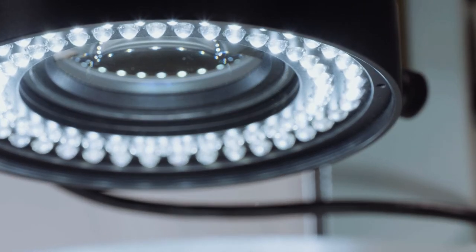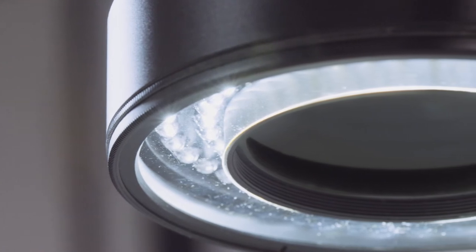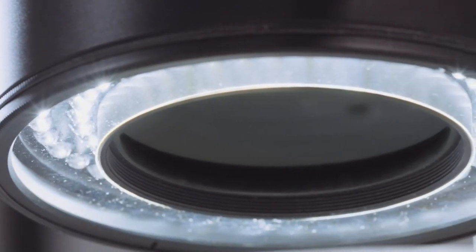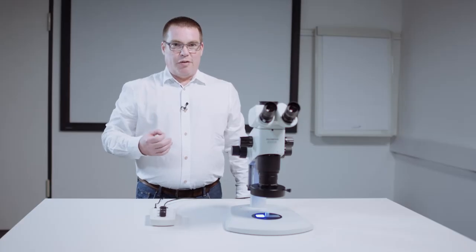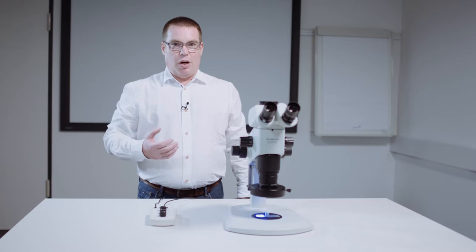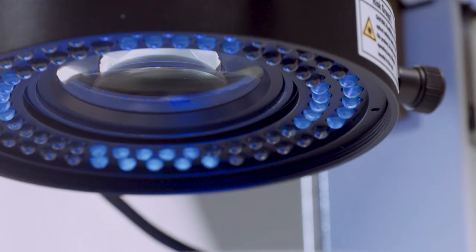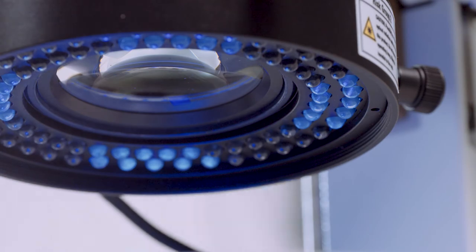Classic ring light brightfield illumination uses white light LEDs that emit light in the visible range. UV light on the other hand is below the visible wavelength, but excites many materials to visible fluorescence. Our UV ring light combines both illumination methods, as the controller can switch elegantly between normal brightfield and UV excitation.